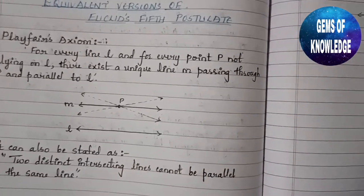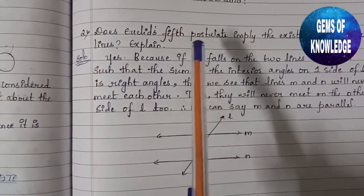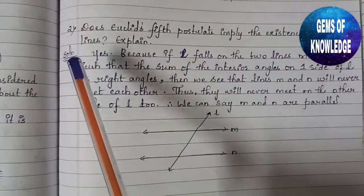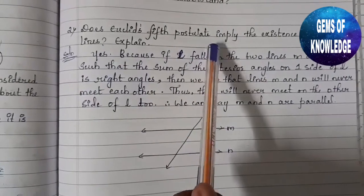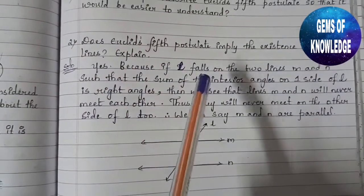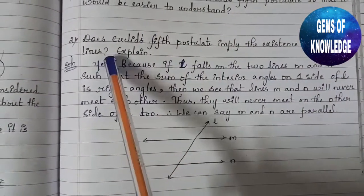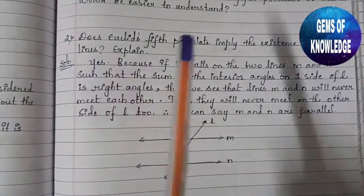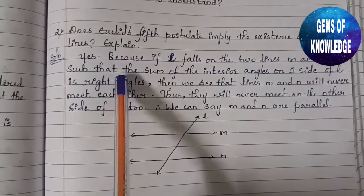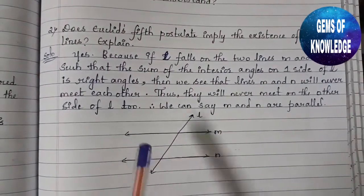The second question asks: does Euclid's fifth postulate imply the existence of parallel lines? Explain. Yes, it does tell us about the existence of parallel lines. If line l falls on two lines m and n such that the sum of the interior angles on one side of l equals a right angle...